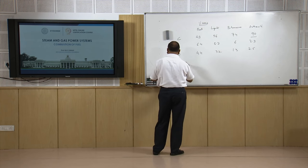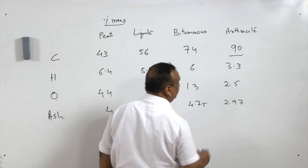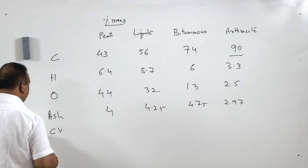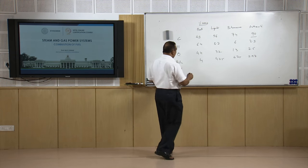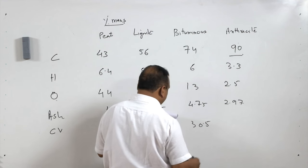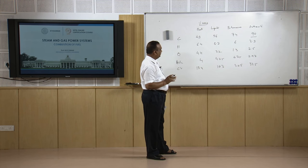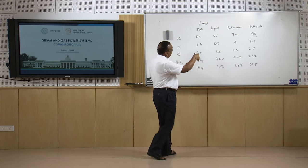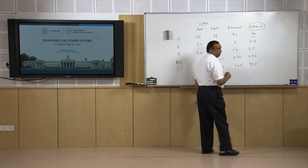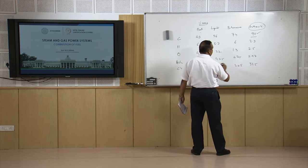Ash content: peat 4 percent, lignite 4.25, bituminous 4.75, and anthracite 2.97 percent. Calorific value of peat coal is 13.4 MJ/kg, lignite 10.3 MJ/kg, bituminous 30.5 MJ/kg, and anthracite 33.5 MJ/kg (approximate, can go up to 34). Anthracite is the best quality coal, with 90 percent carbon and ash content of only 2.97 percent.